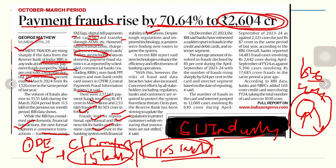Digital payment frauds are not just a simple loss of money — they represent reputational and business risks for banks and cause erosion of trust in the financial system. Despite tough regulations and improved technology, scammers are finding new routes to game the system. The average amount per fraud declined by 85 percent during April–September 2023, while the number of frauds rose sharply by 624 percent in the card and internet segment. Under-reporting also remains a concern, limiting accurate official numbers.